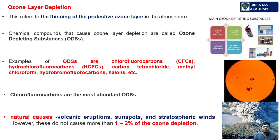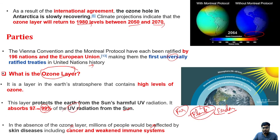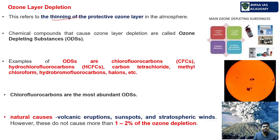Ozone layer depletion means the thinning of the protective ozone layer. The ozone layer is located about 17 to 50 km above the Earth. If ozone depletion increases, the protective layer will be reduced, UV radiation will directly hit the Earth, and skin cancer and related problems will be created.